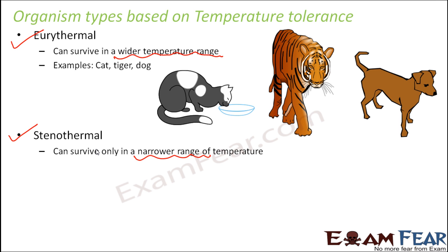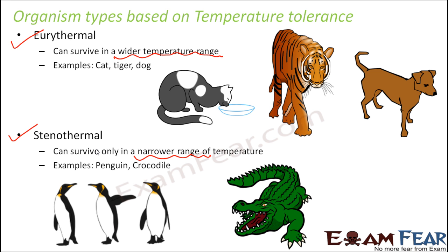Examples of eurythermal animals include cat, tiger, and dog. You would have seen dogs and cats during summer and winter seasons — despite considerable temperature variation, they are able to survive, because they tolerate a wider temperature range. Whereas organisms like penguin can survive only at very low temperatures; if temperatures become a little high, they cannot survive. Similarly, crocodile is another example of a stenothermal animal, found only in specific habitats where that narrow range of temperature is maintained. Going outside that range can even cause death.